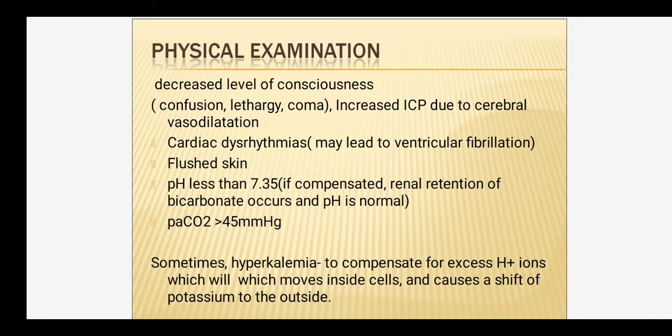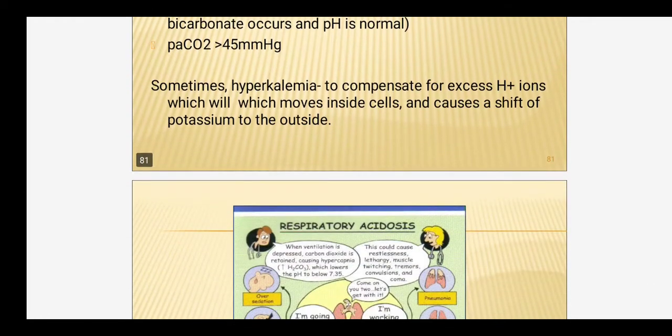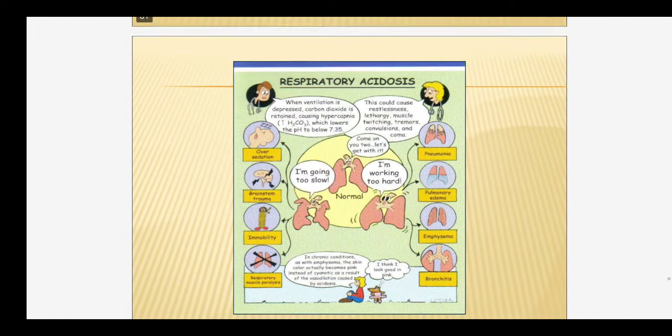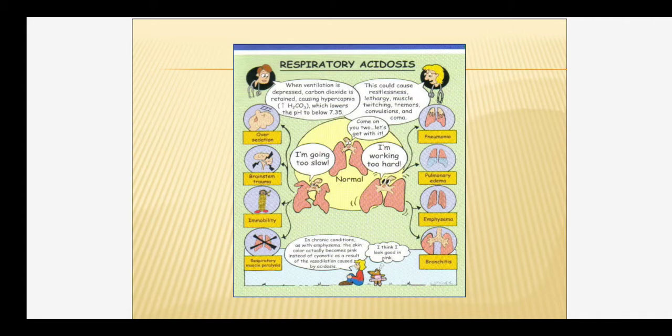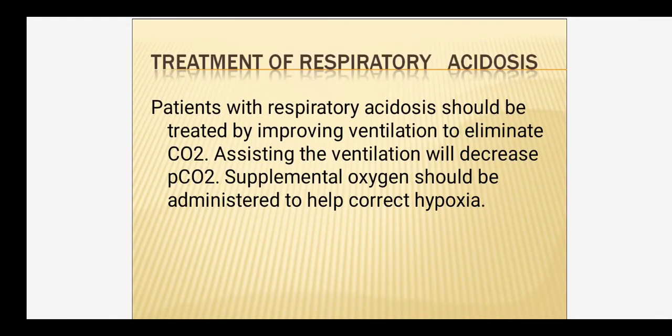Cardiac dysrhythmias and flushed skin are also present. On ABG analysis: pH will be less than 7.35, PaCO2 will be more than 45 mmHg — this is very important to differentiate respiratory acidosis from metabolic acidosis — and bicarbonate is normal. In respiratory acidosis, the partial pressure of carbon dioxide will be very high.